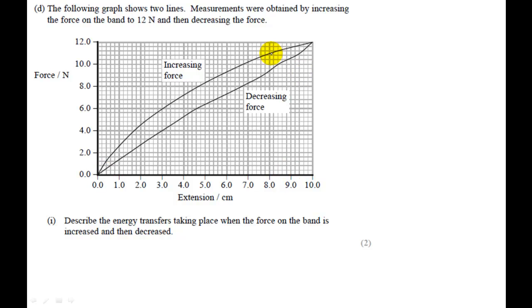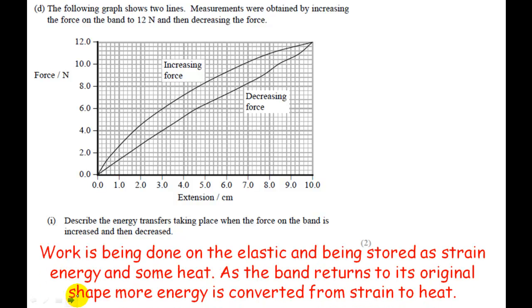So you put in the work of the area of this entire area. And what you got back was this area underneath the second line. So this area in the middle here is the energy or the work that you put in that got wasted as heat due to thermal energy or due to internal friction in the material when it was being deformed. So as long as you get the idea, hopefully you'll be able to express it.